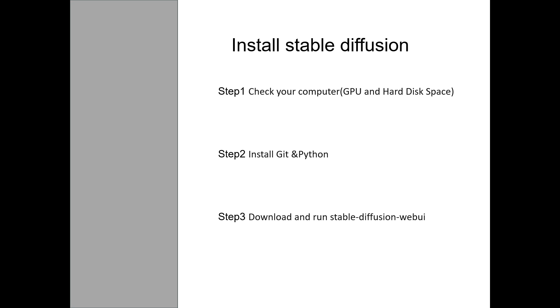To install Stable Diffusion, here are the steps. Step 1: Check your computer. Step 2: Install Python and Git. Step 3: Download and run Stable Diffusion. I will show you step by step.